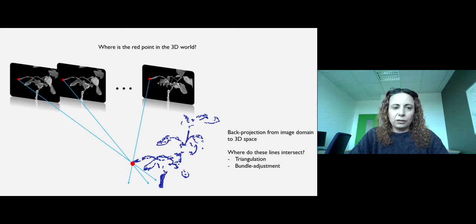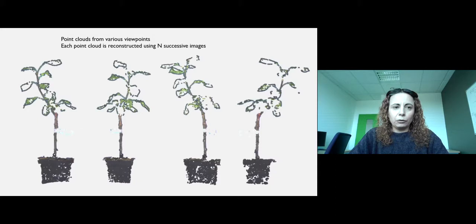We back-project the points which correspond to the same part of the image to the 3D space, and we use triangulation and bundle adjustment to find this location in 3D. We obtain point clouds from various viewpoints.